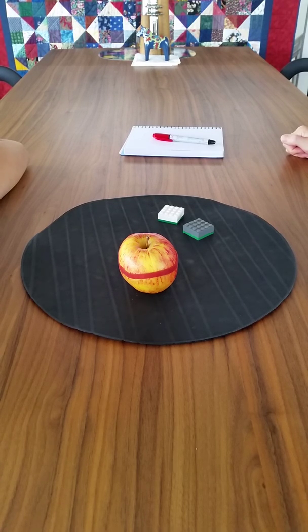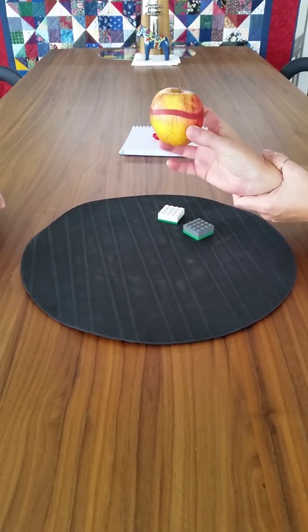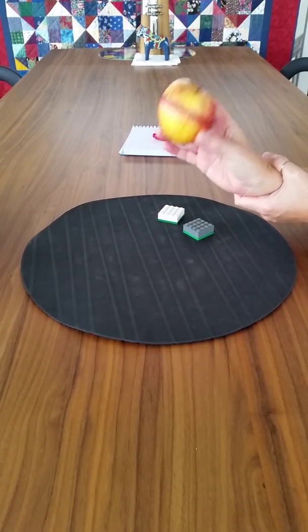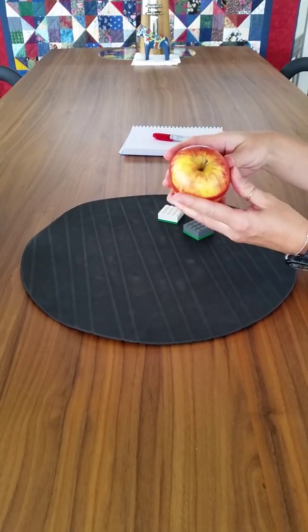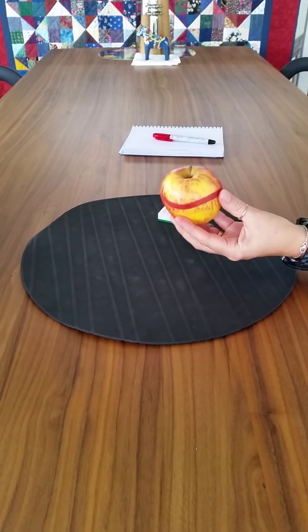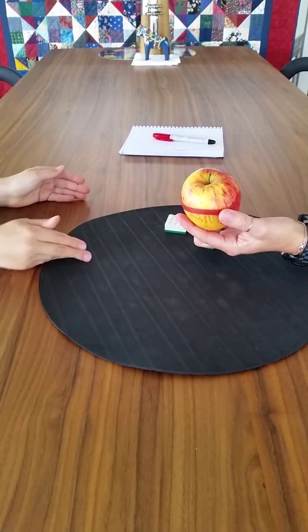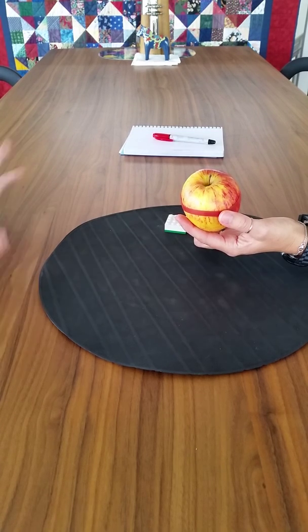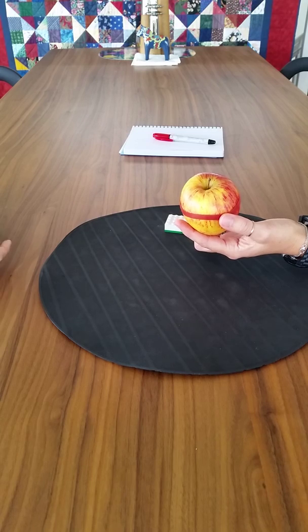All righty Sam, what do we have here? Is it a whole apple? Yes it is. Okie dokie, and so do you know what fractions are? Yes I do. What are fractions? It's about halves, quarters and wholes. Yeah, so it's when parts together make a whole.